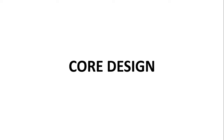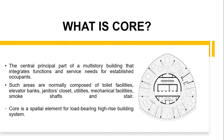This is going to be our last lecture for engineering systems and we are going to discuss what is a core and how do we design it. So let's first start with what is a core. A core is actually a central principal part of a multi-story building which accommodates the functions and service needs established for the occupants.